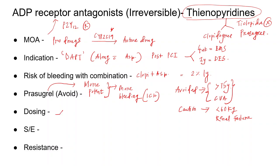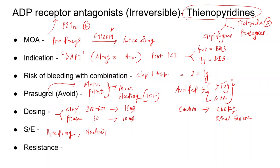Dosing: for clopidogrel, it is a 300 to 600 mg loading dose followed by 75 mg once daily. For prasugrel, it is a 60 mg loading dose followed by 10 mg per day maintenance. Side effects include bleeding, neutropenia, thrombocytopenia, and TTP (thrombotic thrombocytopenic purpura).